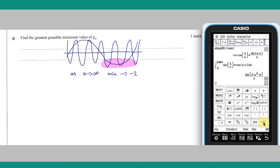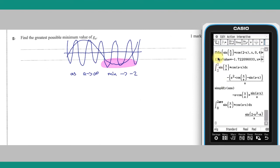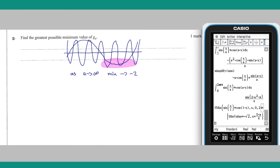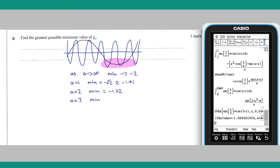The minimum values of g_a for these a values can be found by modifying the fmin command used earlier. This thinking and these calculations suggest that the greatest possible minimum value of g_a is when a equals 1.